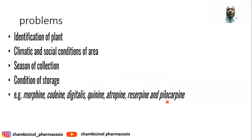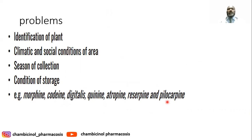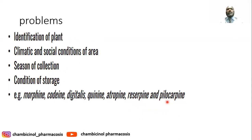There are some challenges when getting drugs directly from plants: difficulty in plant identification, chance of adulteration because some plants look alike, and variation in phytochemical constituents due to different climatic and social conditions of the area. Some plants are available in certain zones and not in others because of different climatic conditions.